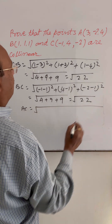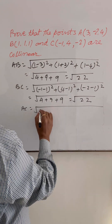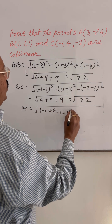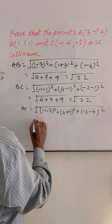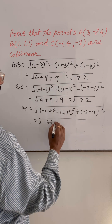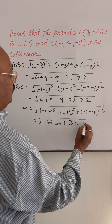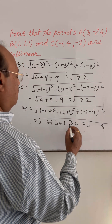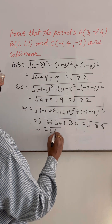Now let us find AC. Taking x1, y1, z1 and x2, y2, z2 for points A and C: AC = √[(−1−3)² + (4+2)² + (−2−4)²] = √[(−4)² + (6)² + (−6)²] = √[16 + 36 + 36] = √88 = 2√22.